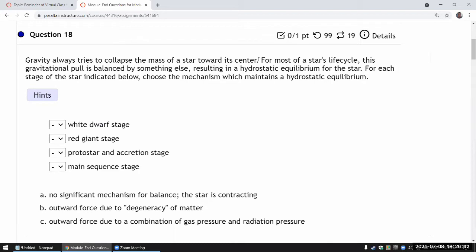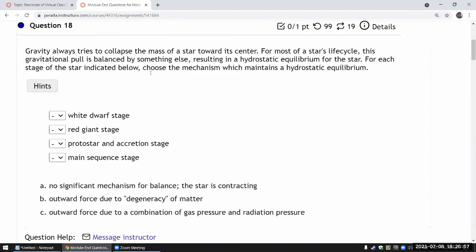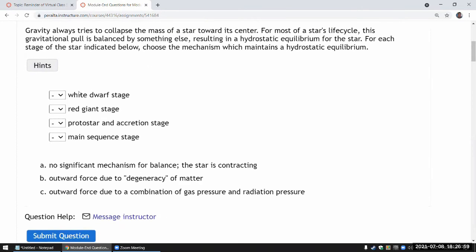So for most of a star's lifecycle, we expect that hydrostatic equilibrium to be maintained. And it's a question of what provides that outward pressure for maintaining the hydrostatic equilibrium. Let's go through each stage one at a time.